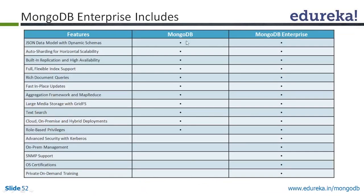There are some extra features available in MongoDB Enterprise that are not in the Community Edition. With Community Edition, you get the same base features, but advanced security, on-premise management, SNMP support, OS certification, and training are not included — those are only available in the Enterprise edition.